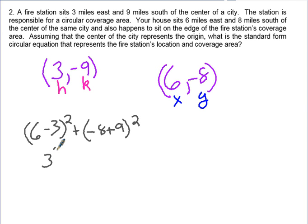Six minus three is three squared plus negative eight plus nine is one squared. This is going to give me ten.